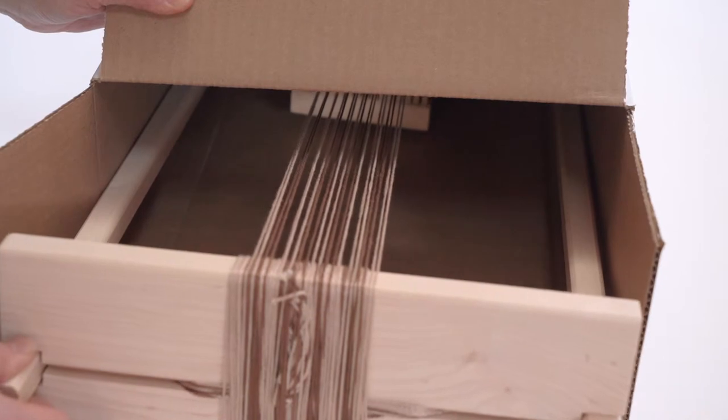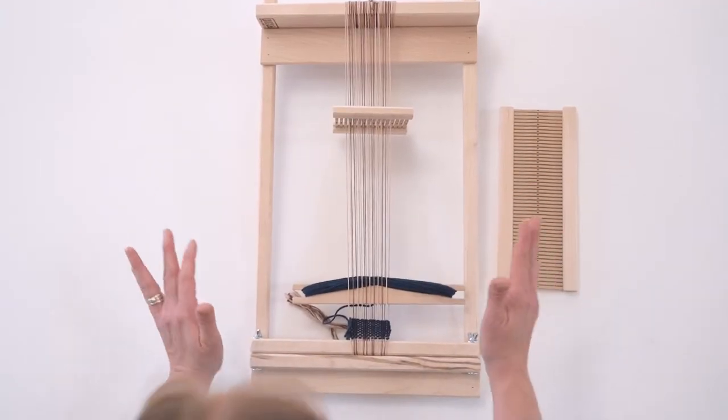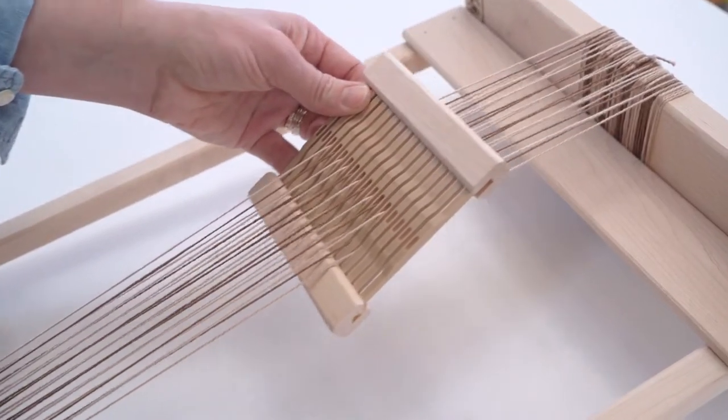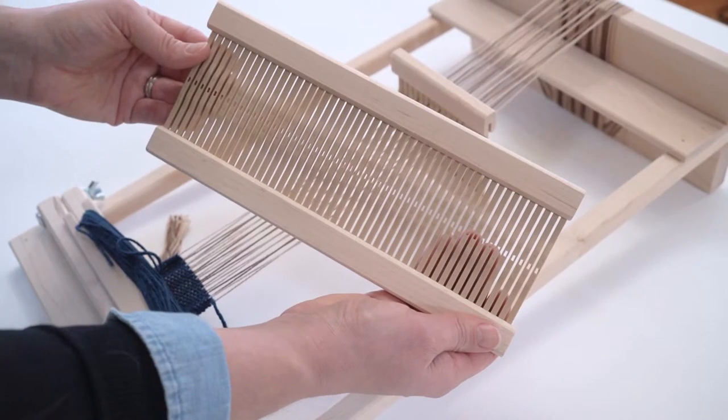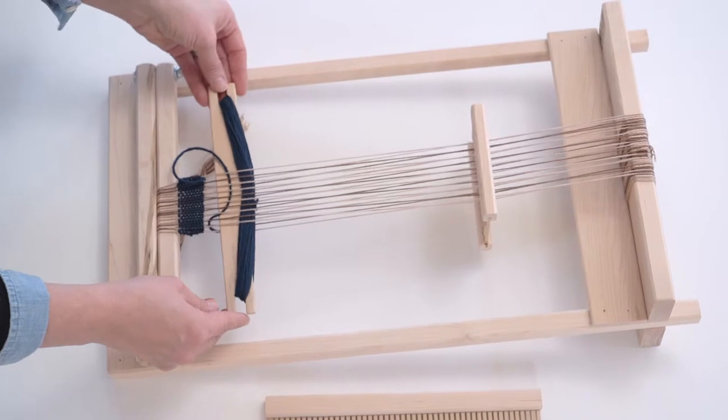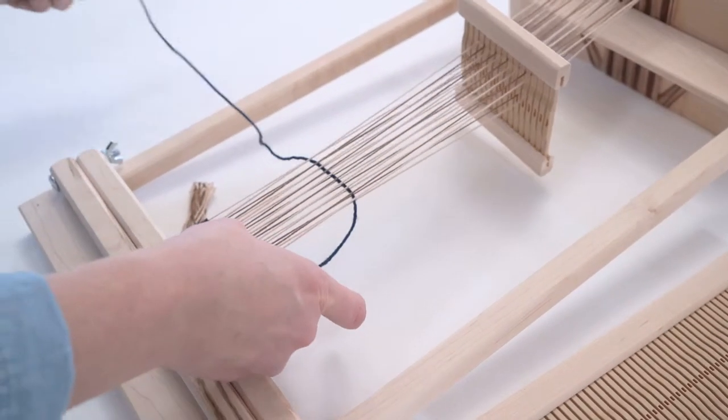This is the Becca 10 inch Beginner's Rigid Heddle Loom and it comes out of the box ready to go. On it is the four inch heddle, an eight dent four inch heddle, but it also comes with a 10 inch 10 dent heddle and one stick shuttle. You literally take it out of the box and it's ready to start weaving.